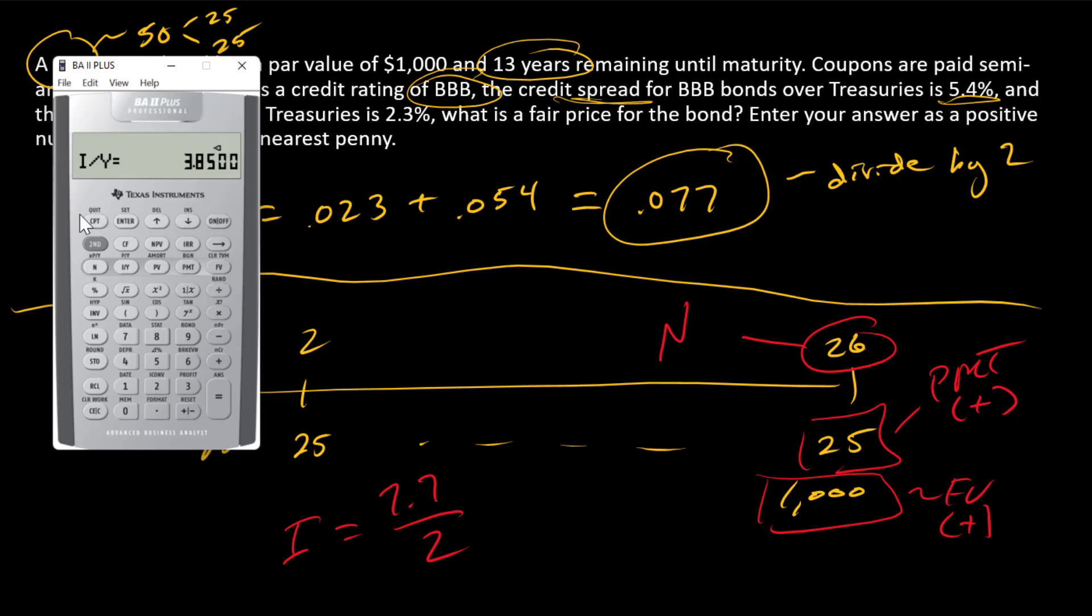Now this bond should sell at a discount to par. That's because the yield to maturity is greater than the coupon payment, and so this number that I get should be something less than $1,000. So let's see what it is. Compute PV, and there's the answer: $780.66.